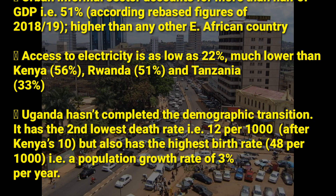Kenya's death rate is 10 per 1,000, but Uganda also has the highest birth rate of 48 per 1,000. As a result, the population growth rate of Uganda is 3% per annum, which is still high.